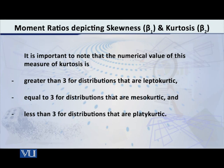If this ratio comes out to be equal to 3, then we conclude that the distribution is mesokurtic, that is, as much peaked as the normal distribution, that beautiful bell-shaped curve. And if this ratio is less than 3, then we conclude that the distribution is platykurtic, even flatter than the normal distribution. So this is the story of moment ratios.